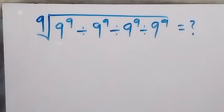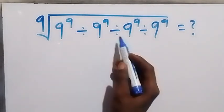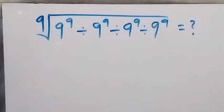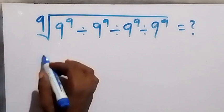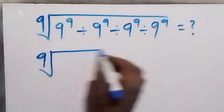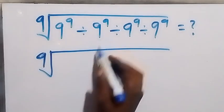Hello, you are welcome. How to simplify ninth root of 9^9 divided by 9^9 divided by 9^9 divided by 9^9? From here we can simplify inside the root. We have ninth root of the first two together. When we divide 9^9 divided by 9^9, that will be 1.